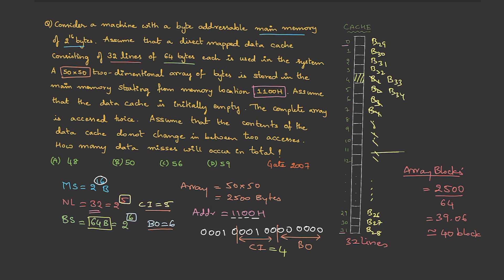Since the array is accessed twice, after block 40, the second access starts again from block 1. Block 1 is not in cache, so it's a miss and gets replaced. However, blocks 9 through 32 are still present in the cache from the first access, so those are hits. Then blocks 33 through 40 are not present, so those are misses again.